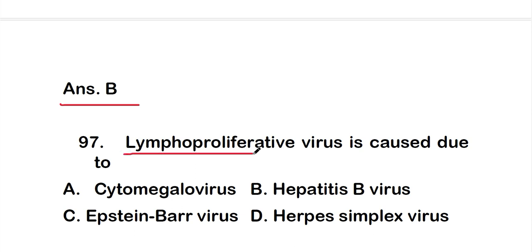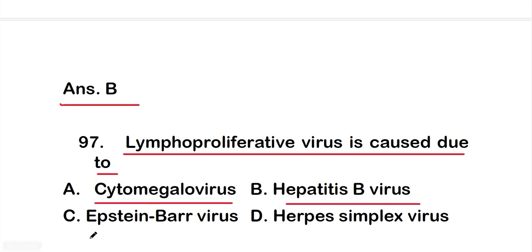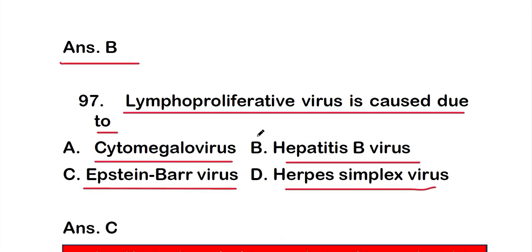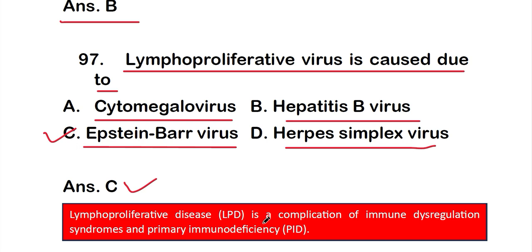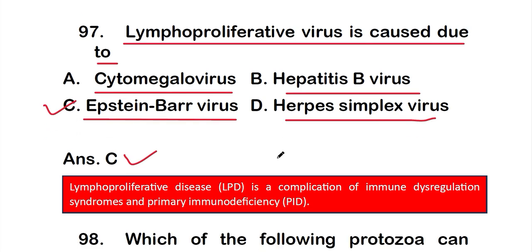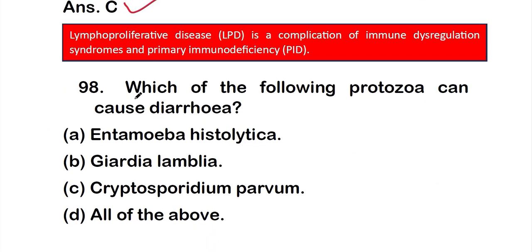Question number 97: lymphoproliferative disease is caused due to option A, cytomegalovirus; option B, hepatitis B virus; option C, Epstein-Barr virus; or option D, herpes simplex virus. The right answer is option C — Epstein-Barr virus. Lymphoproliferative disease is a complication of immune dysregulation syndrome and primary immunodeficiency.